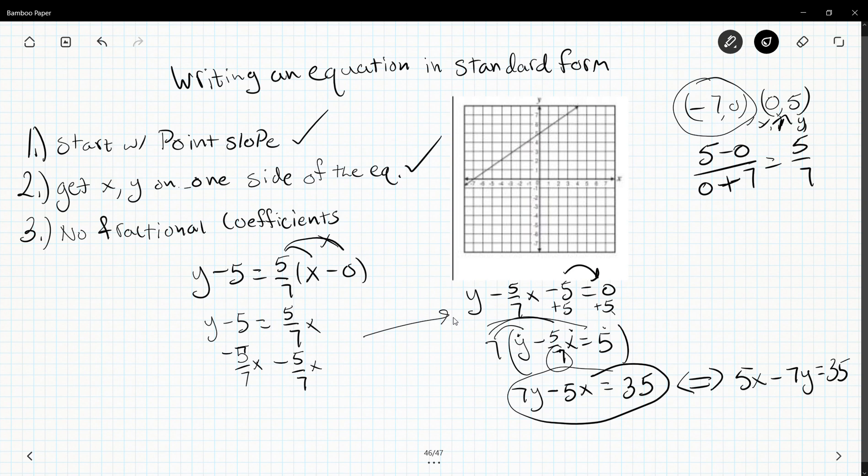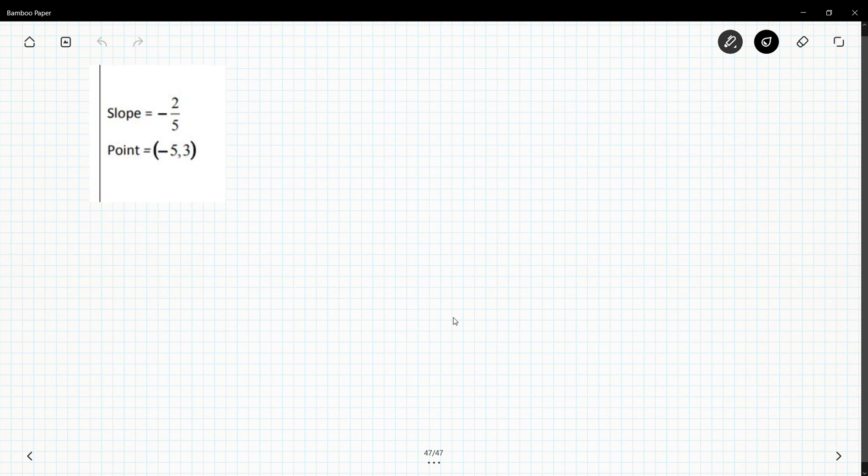Let's do that with a different number. I've got slope and I've got a point, so we'll plug these things in. y minus 3 equals negative 2/5 times x minus negative 5, so plus 5.